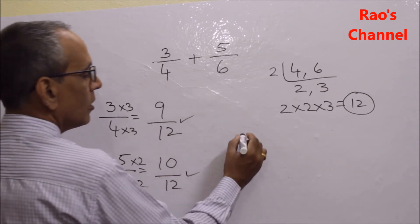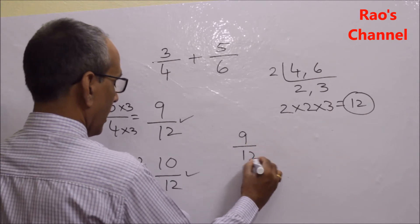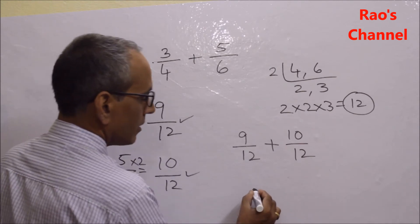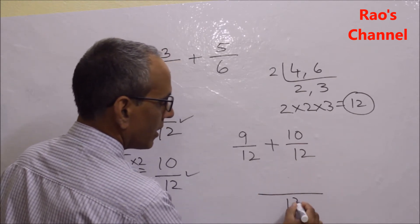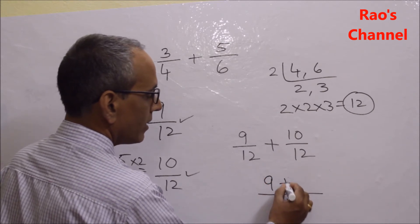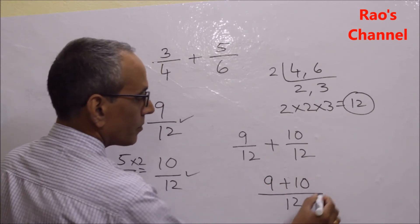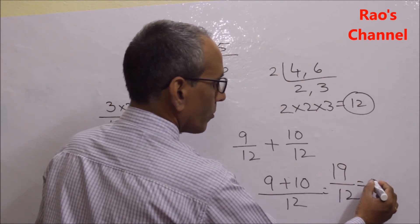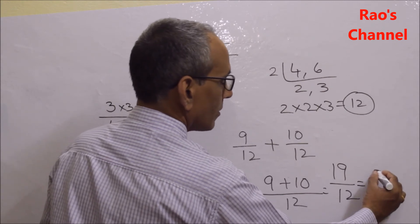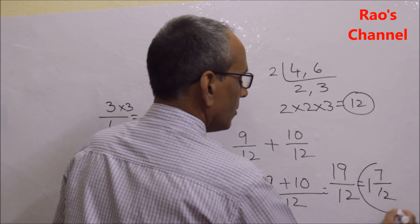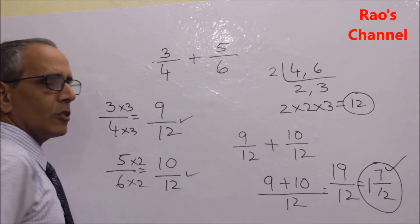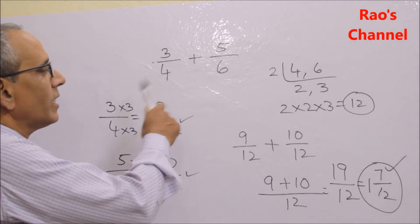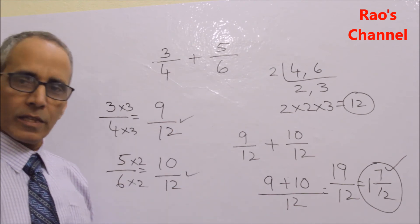Now I add the like fractions 9 by 12 and 10 by 12. Since they are like fractions, I keep the common denominator and add the numerators: 9 plus 10 gives 19 by 12. Converting this improper fraction into a mixed fraction gives 1 and 7 by 12. LCM is the best tool to convert any group of unlike fractions into like fractions so that we can perform addition and subtraction. Thank you for watching.